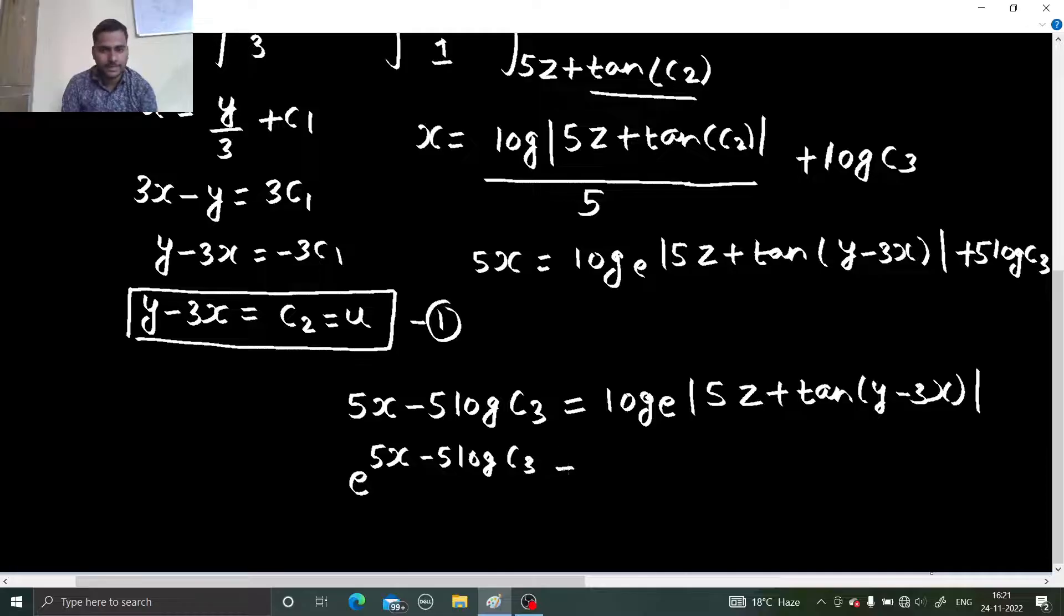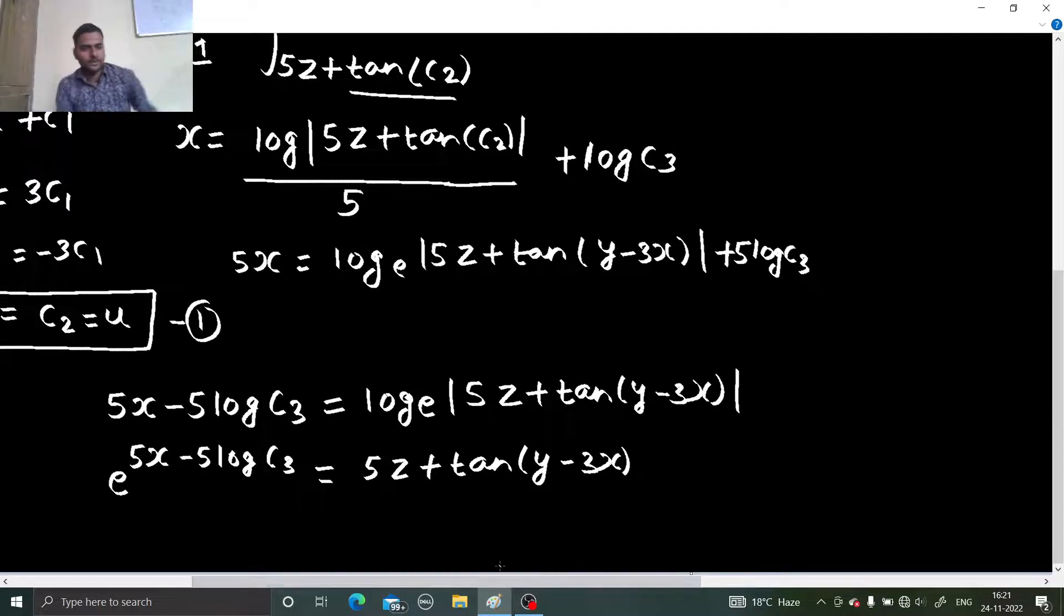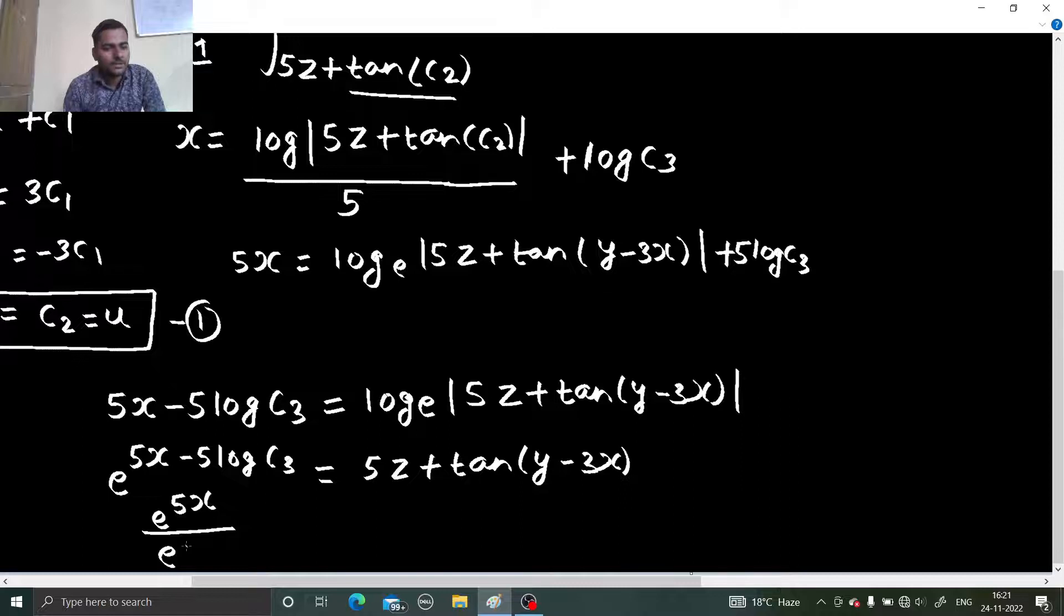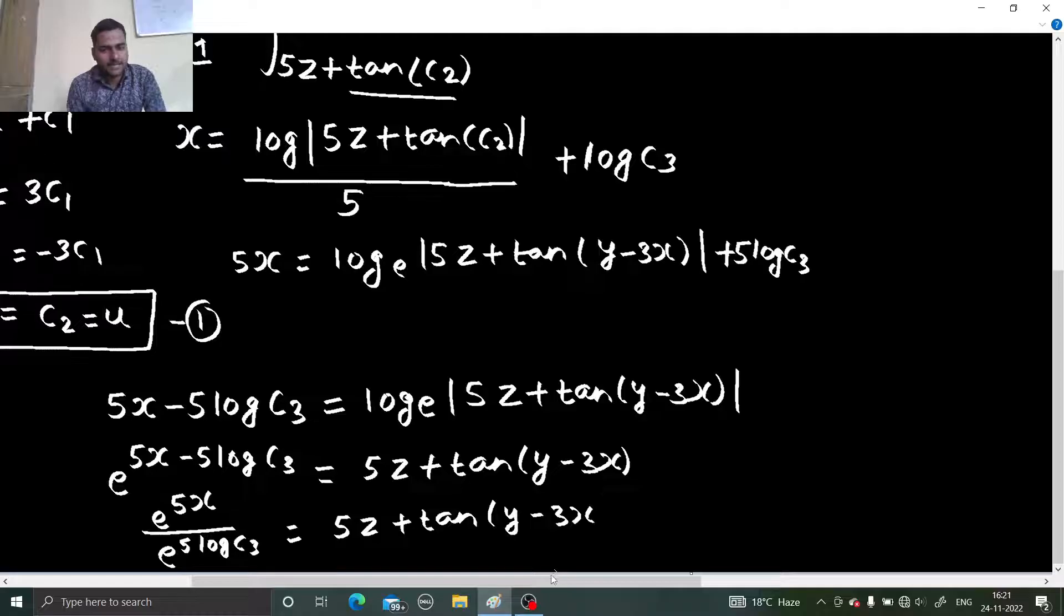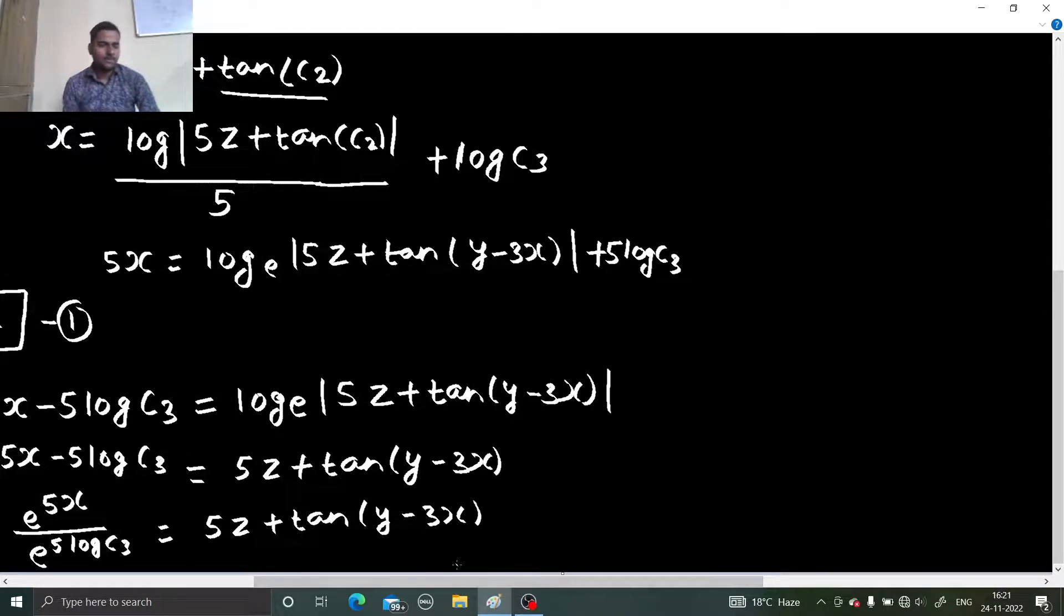So this side becomes e power 5x minus 5 log c3. I know how to treat them. Let's see. 5z plus tan y minus 3x. So I can write this as e power 5x. This entire thing, e power this thing. If you want, you can simplify this. You can write this as e power 5.